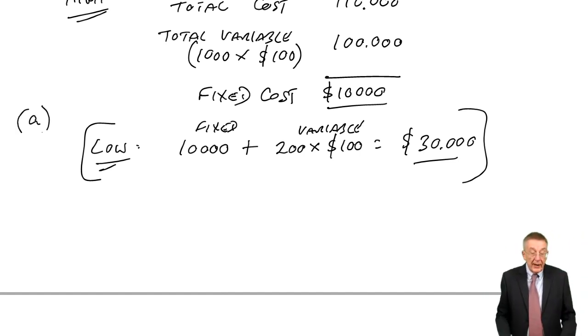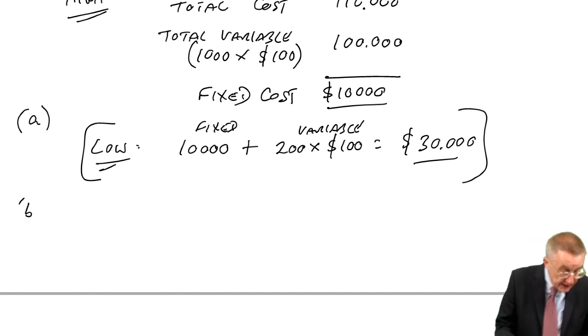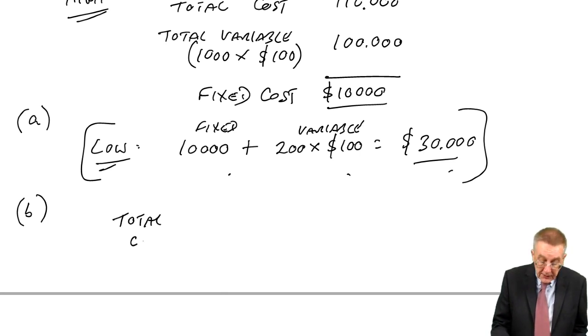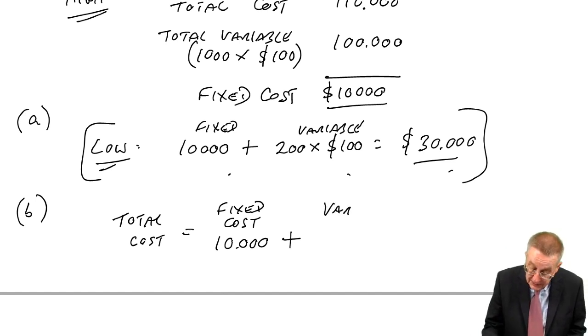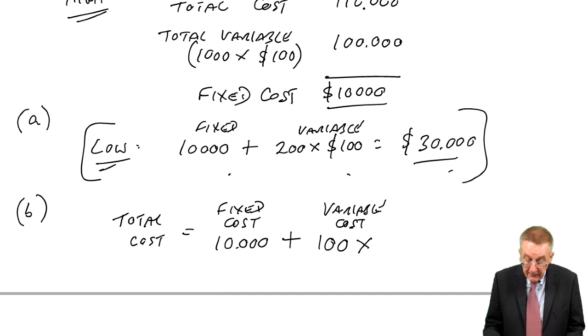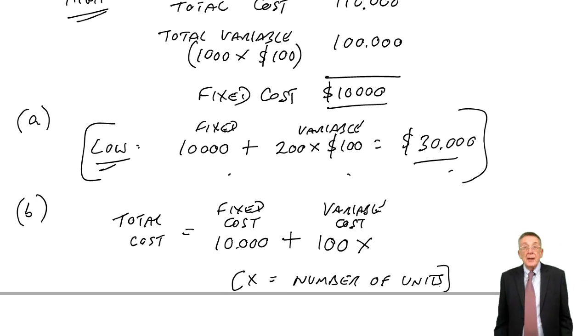The question itself said, what are the fixed and variable elements? Well, we've done it. It also said, describe the relationship in the form of a linear equation. All it's doing is what I did there, that surely whatever happens, the total cost will be equal to the fixed cost, which for ours is 10,000, plus a variable cost. What will the variable cost be? It's $100 a unit. It will be 100 times X, where X is the number of units. So that's what it means by a linear equation.